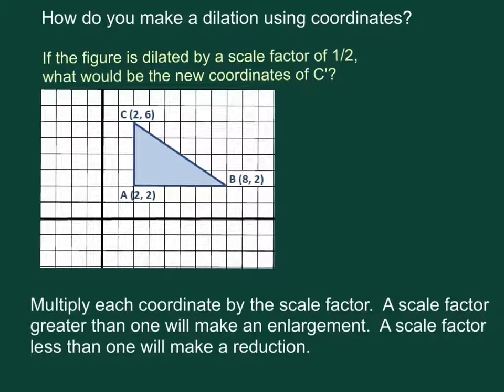You can make a dilation by multiplying its sides, or you can look at the individual vertices. So if you dilate this figure by a scale factor of 1 half, we could find the vertices of C prime.